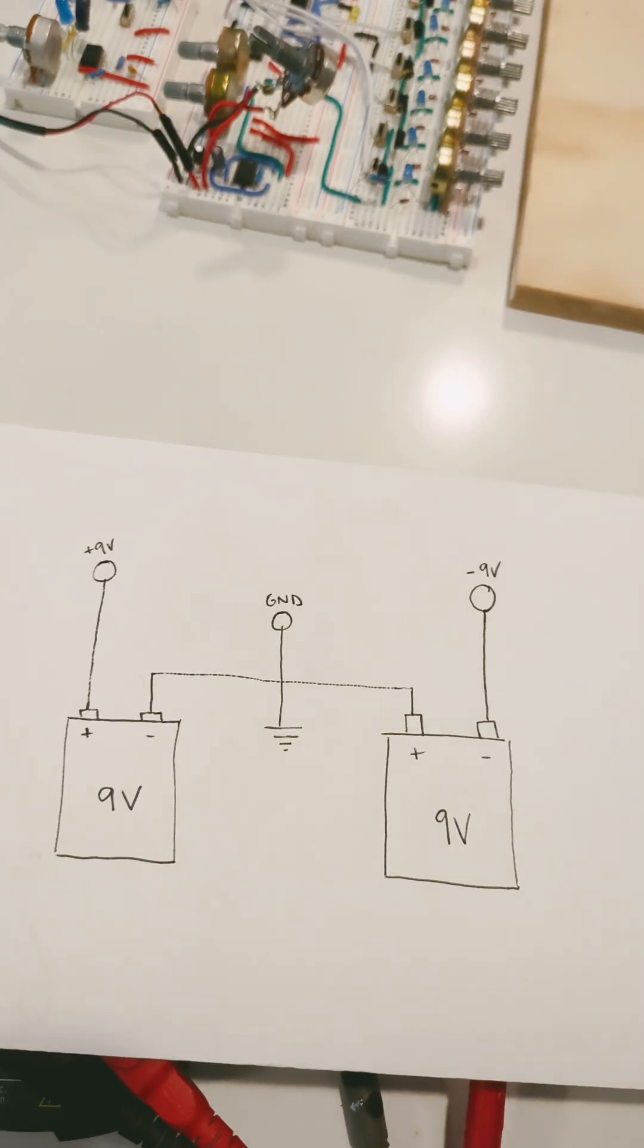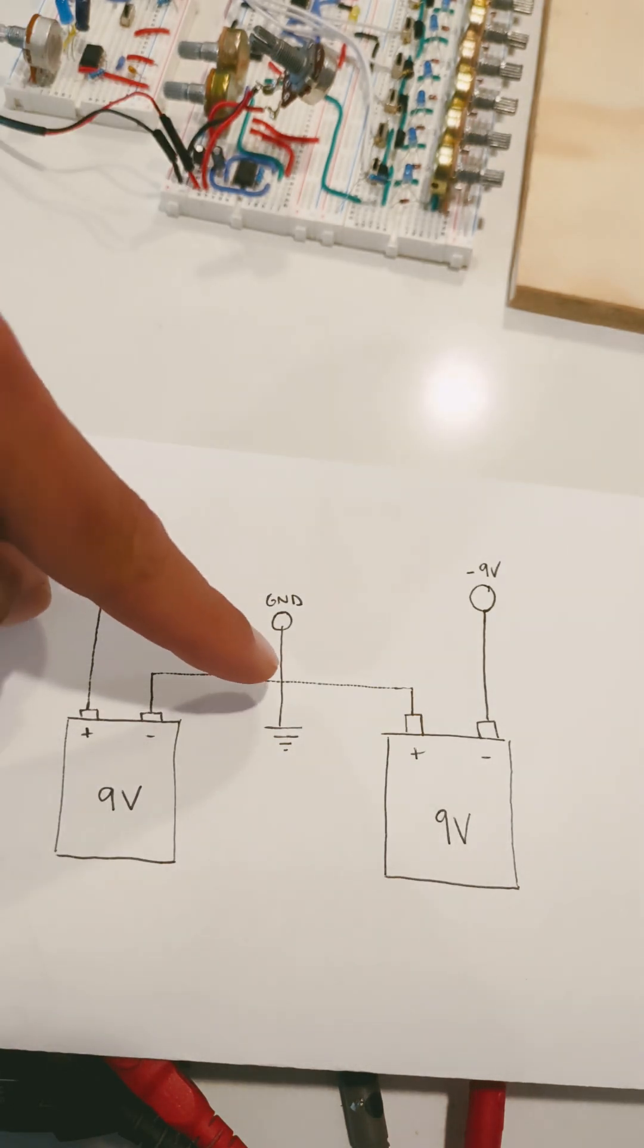So I'm going to show you how to take two 9-volt batteries and make that happen. The way you do it is in the picture here: you wire the batteries in series with a center ground point.